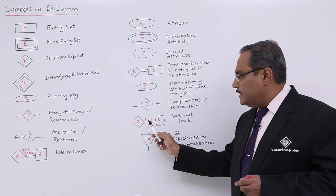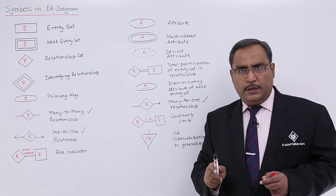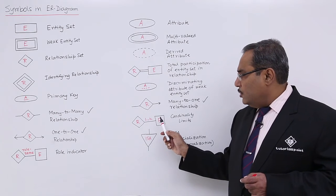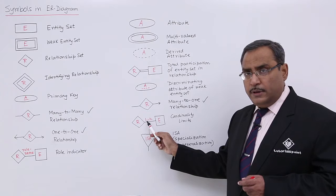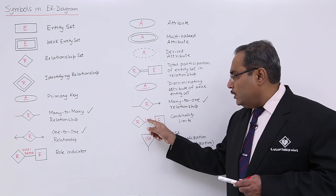Cardinality limits will be denoted in this way. Here it has been written as 1 dot dot h. That means each entity's respective primary key value can exist for minimum one time and for maximum h number of times.